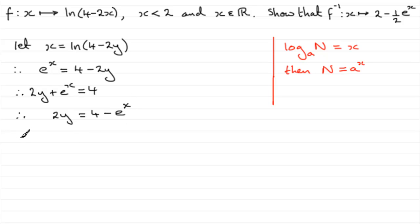And then divide by 2, so therefore, you end up with y equals half of 4, which is 2, and then we'll just write minus half e to the power x. So, you can basically see that we're getting what we needed to show here. Only I need to finish it off in this style.